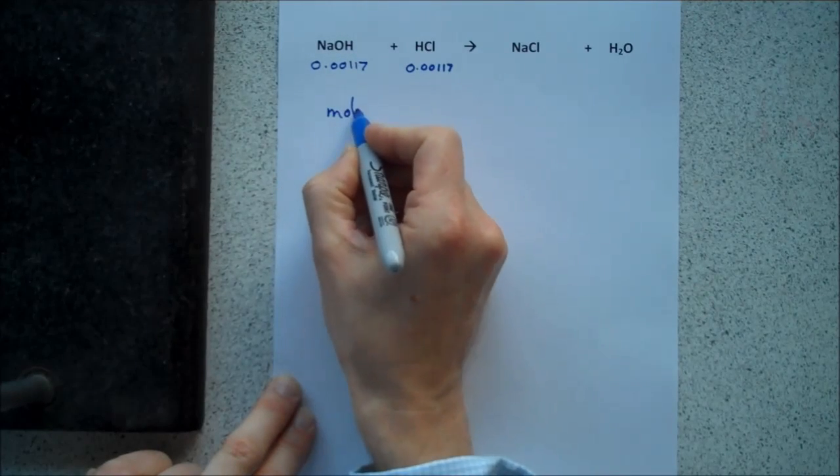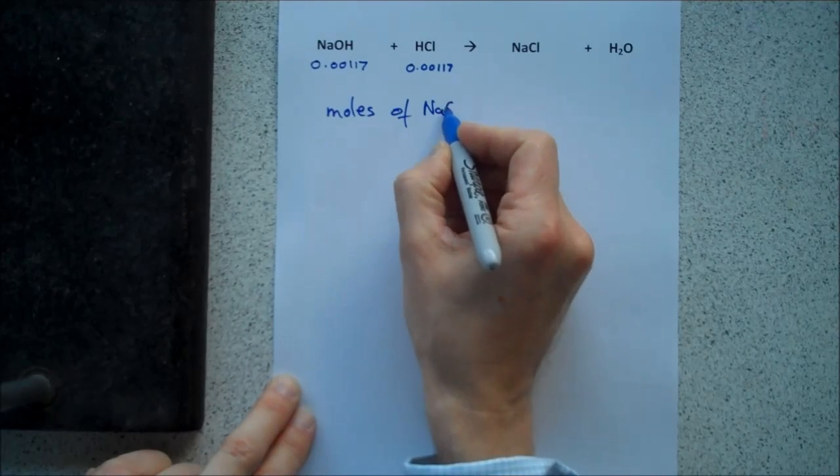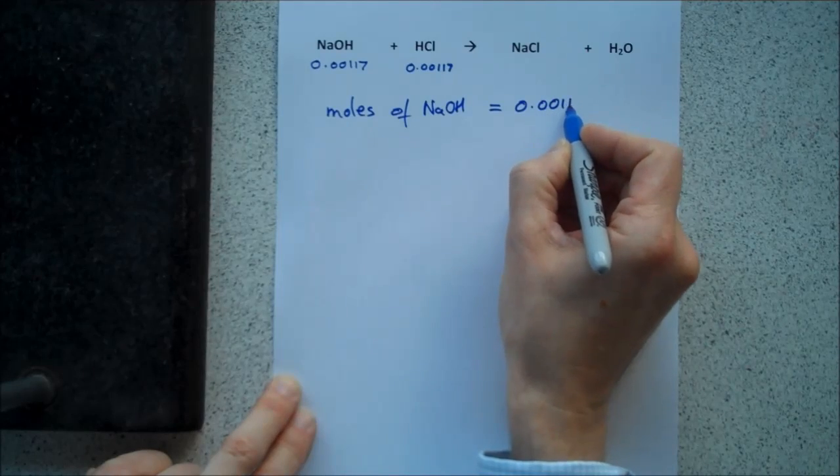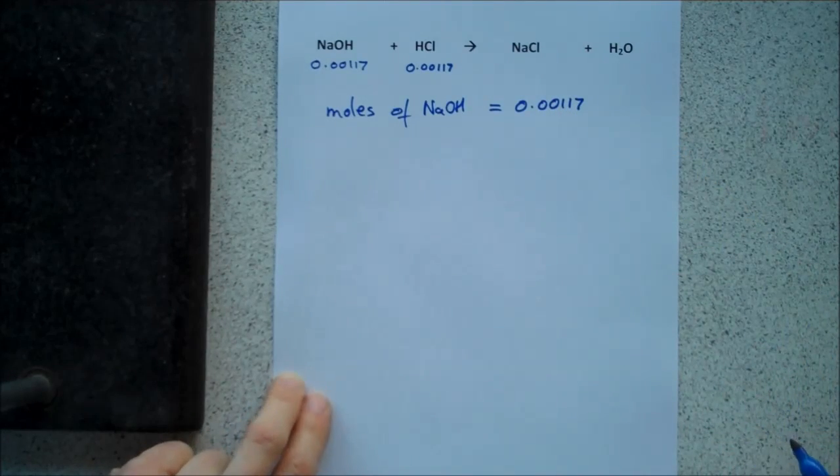We know that the amount of sodium hydroxide and HCl must be exactly the same because we stopped adding hydrochloric acid at the instant where the indicator changed colour, telling us that all the sodium hydroxide had been neutralised. Sodium chloride and water are neutral. So, this means that there must be the same number of moles of sodium hydroxide. And if I was writing an example question, I would actually write out moles of sodium hydroxide equals 0.00117. It doesn't take you long to do that. And it shows the examiner you know what you're doing.